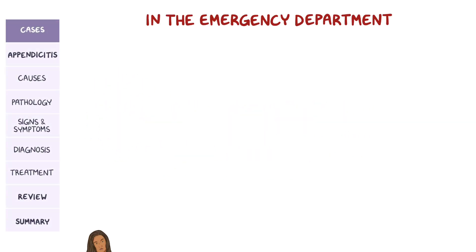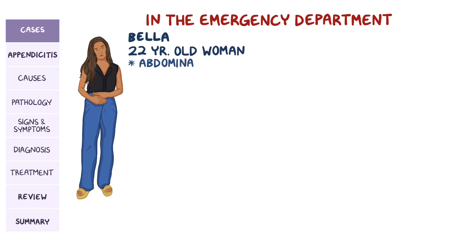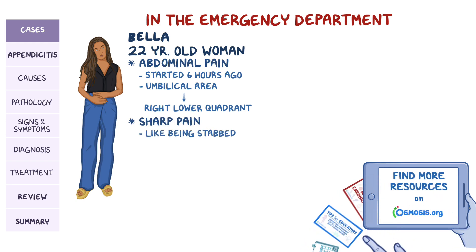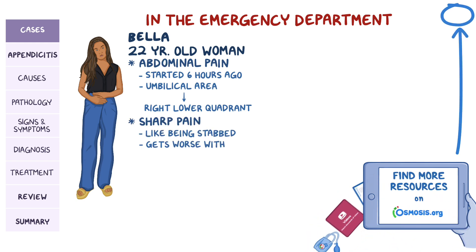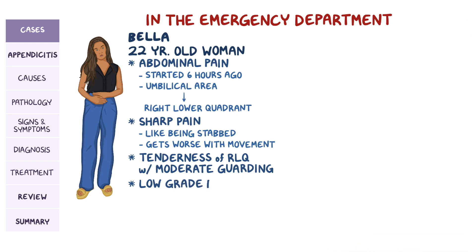While in the emergency department, Bella, a 22-year-old woman, presents with abdominal pain that started six hours ago. The pain was initially located around the umbilical area, but it has migrated to the right lower quadrant in the past few hours. The pain is sharp like being stabbed with a knife, and it gets worse with movement. A physical examination showed tenderness of the right lower quadrant, with moderate guarding, and a low-grade fever of 100.4 degrees Fahrenheit.